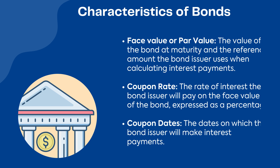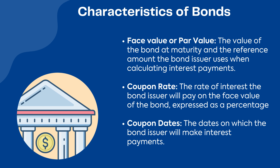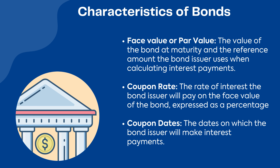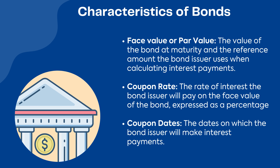Characteristics of bonds — face value, or par value: the value of the bond at maturity, and the reference amount the bond issuer uses when calculating interest payments. Coupon rate: the rate of interest the bond issuer will pay on the face value of the bond, expressed as a percentage.